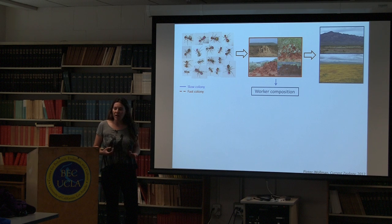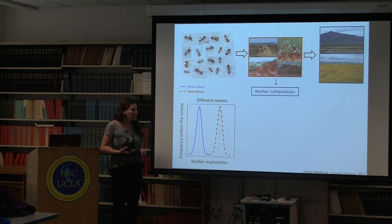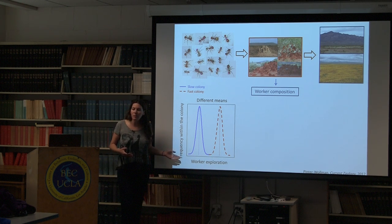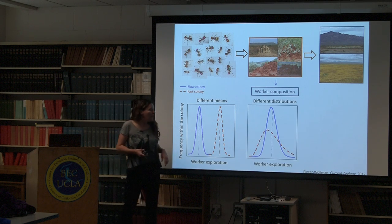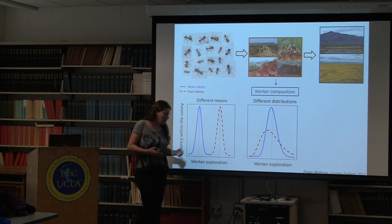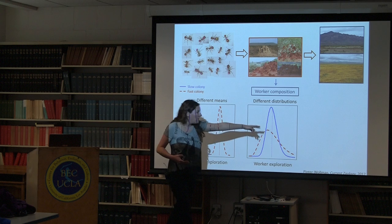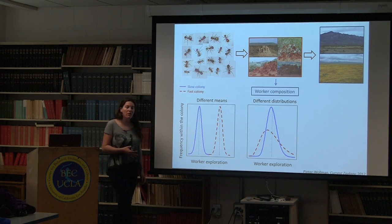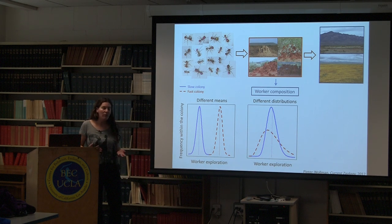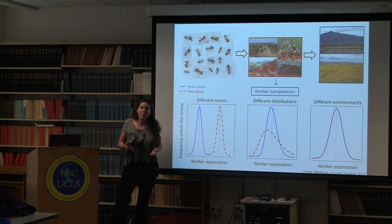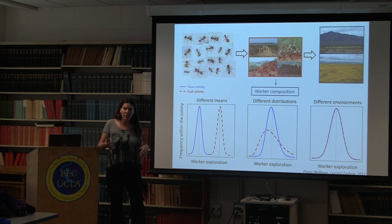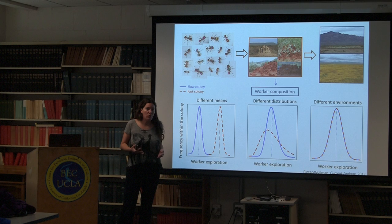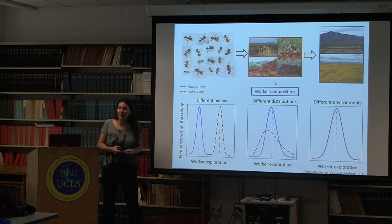We can come up with different hypotheses for why we observe this difference. The first is that the mean behavior of the individuals comprising these groups is different - the exploratory behavior of the blue colony is much lower overall. An alternative hypothesis is that there is a difference in the distribution of behaviors. A third hypothesis is that maybe there is no difference in composition but something about the environment is different, such as one colony being in the shade.